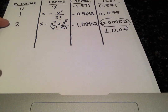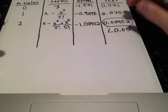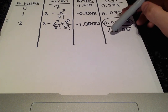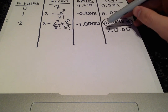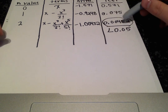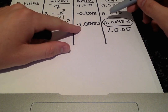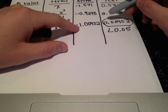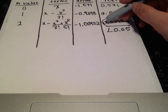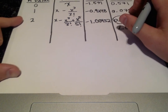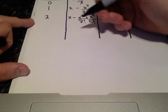To summarize: three terms were needed to arrive at the approximation. Sine of negative pi over 2 is approximately negative 1.00452, which has an absolute true error of 0.00452.